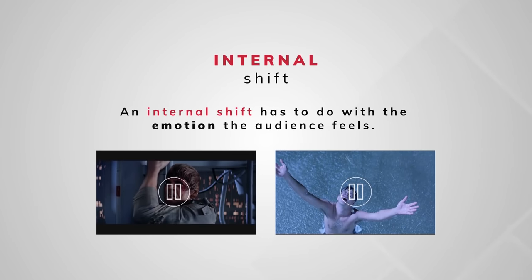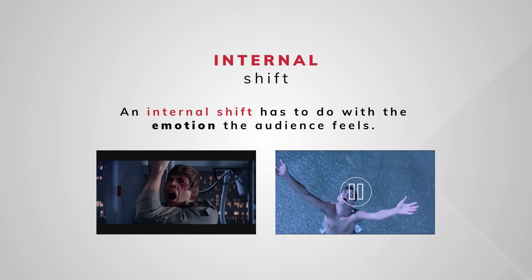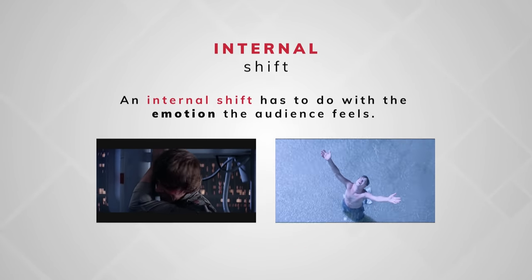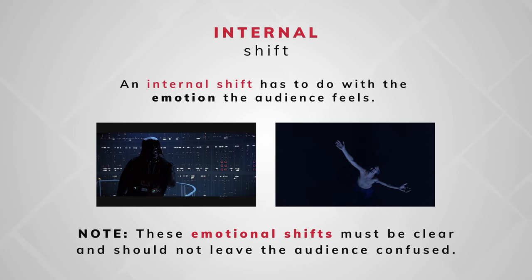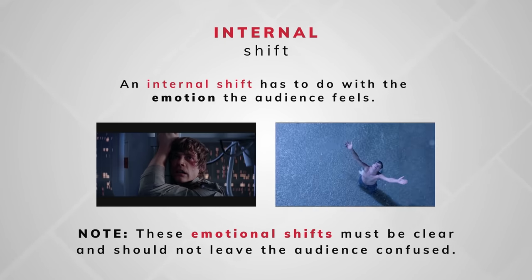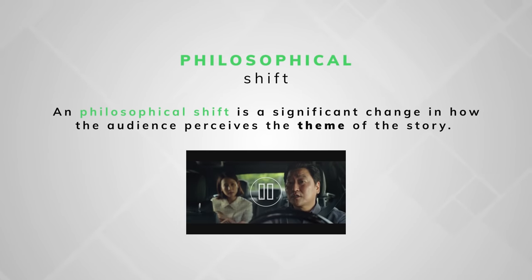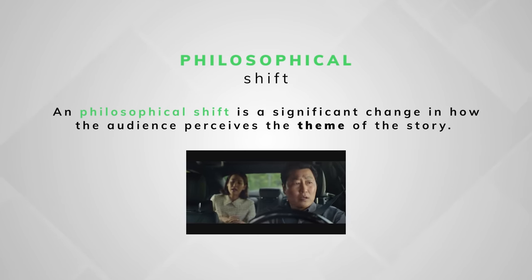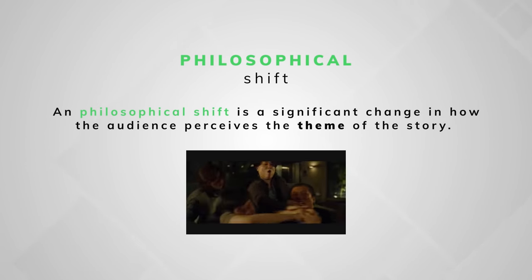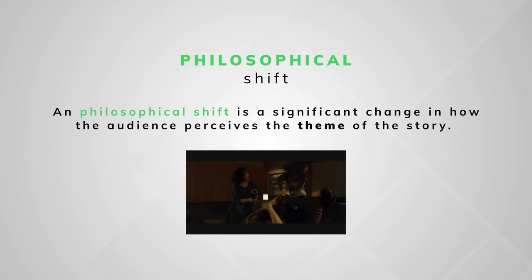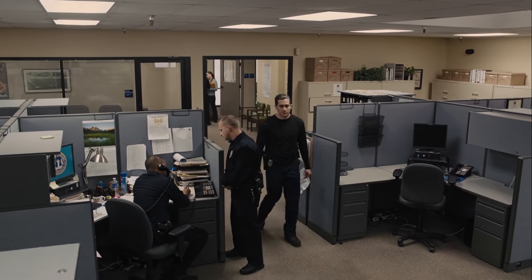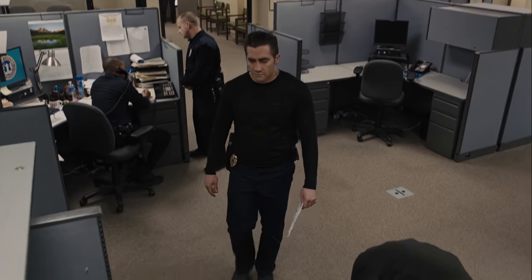An internal shift has to do with the emotion the audience feels — how they go from feeling peace to being hit with an event that shocks them, or from a state of depression to a state of hope. These emotional shifts must be clear and should not leave the audience confused. A philosophical shift is a significant change in how the audience perceives the theme of the story — they go from seeing a certain philosophical belief as correct or strong to realizing that belief is flawed or weak. This is where a lot of writers fall short: when crafting their twist, they end up applying one or two of these layers, but not all three.